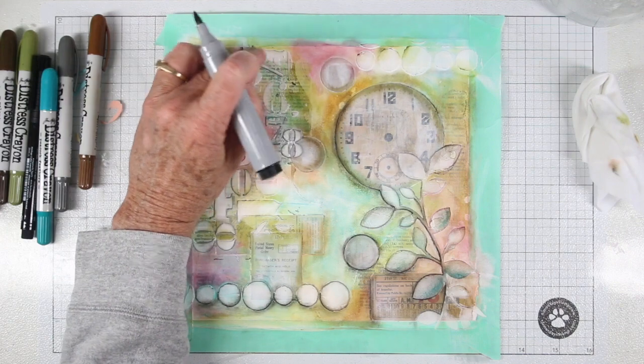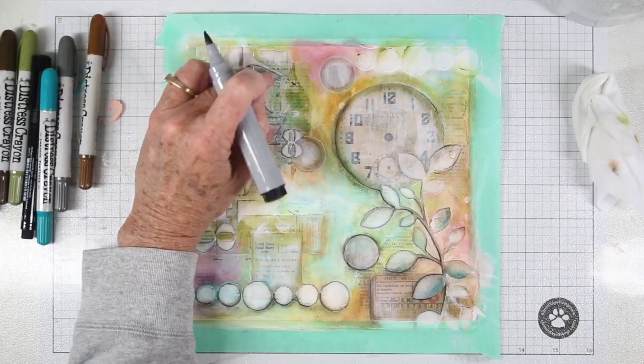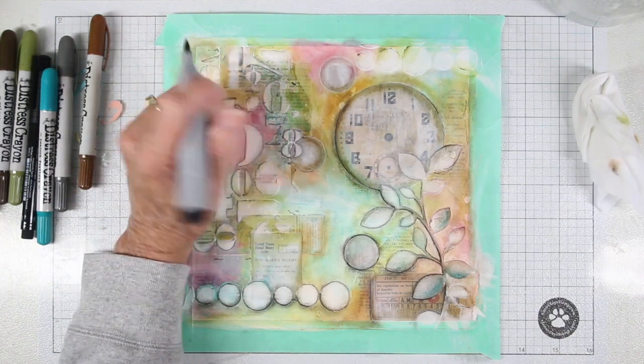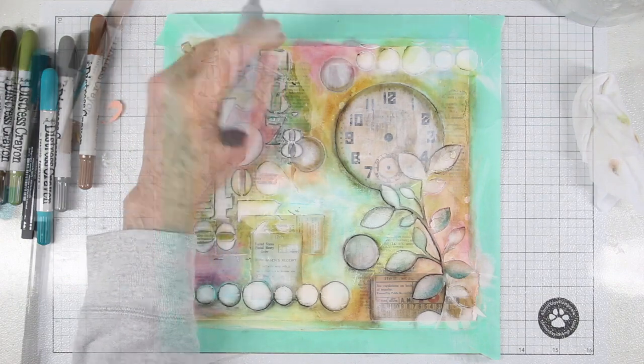To go around my number stencils, I'm using the big brush—this is a Stamper's Big Brush also from Faber-Castell—and this is a gray color. I don't want a really dark color; I just want to give a little bit of dimension so the numbers look like they're popping up from the page.